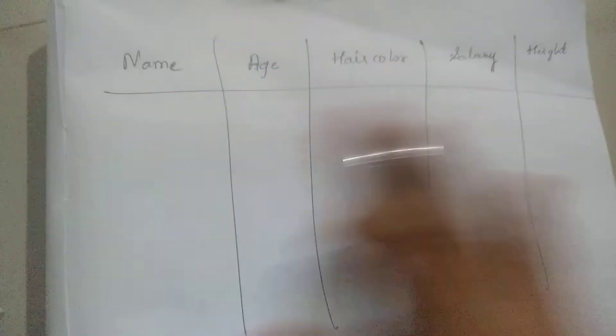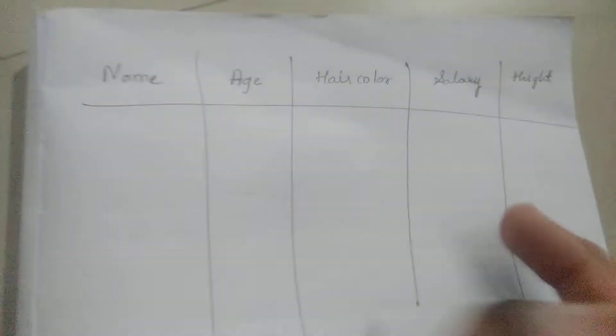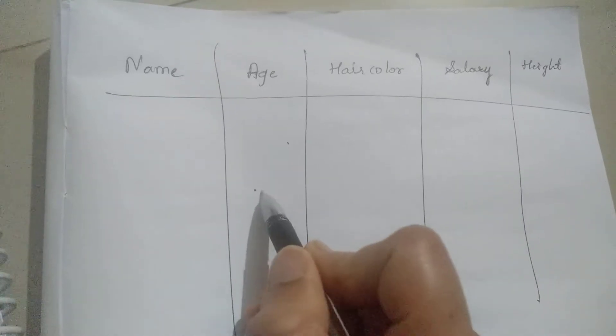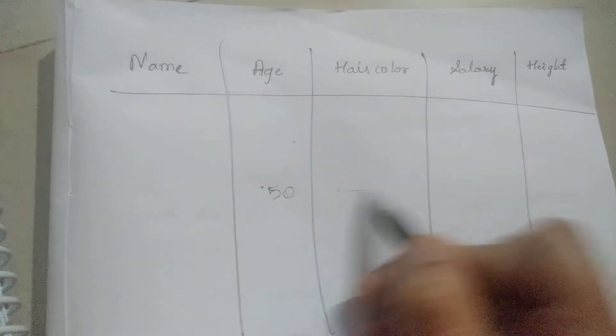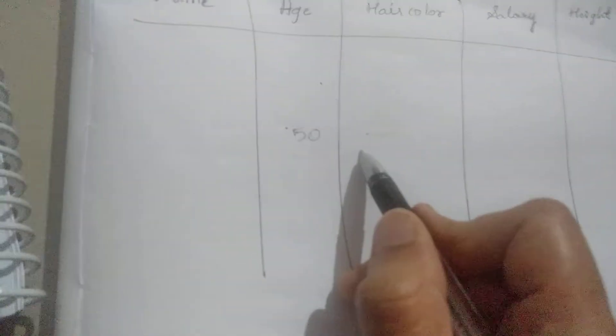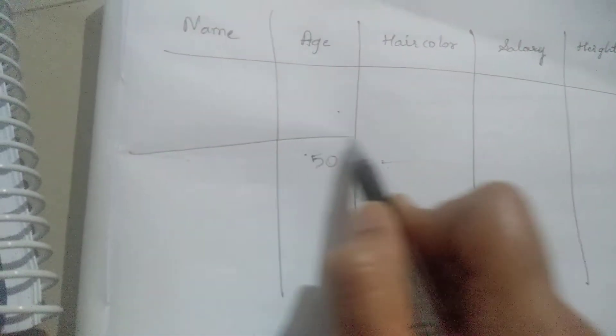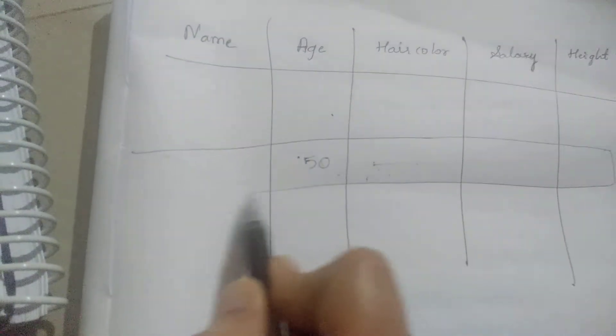In the sequential covering algorithm, suppose we have certain examples. Consider that I found one rule: if age is greater than 50, the hair color is white. Once I find this rule, I remove all the examples that come under this rule.